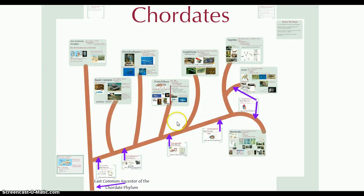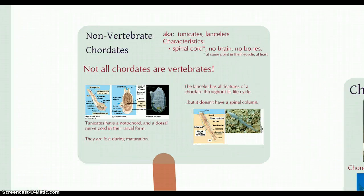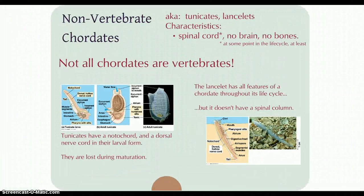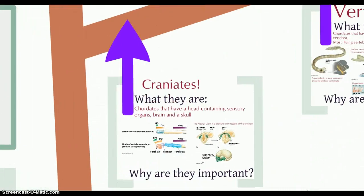There are chordates that don't have a true spine or spinal column. They'll have the nervous tissue but without the vertebrae we associate with a spinal column. These organisms have a spinal cord but very simple lifestyles — no brain and only cartilaginous skeletons. They're fairly simple filter feeders — the brainless, headless chordates.